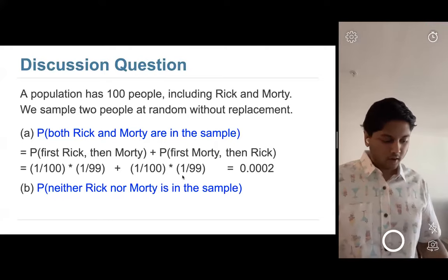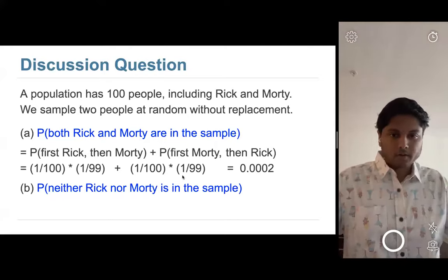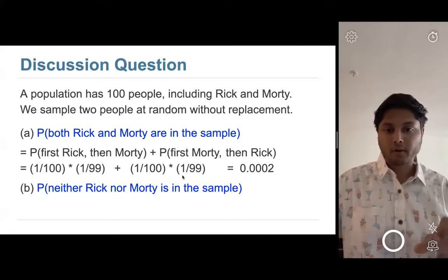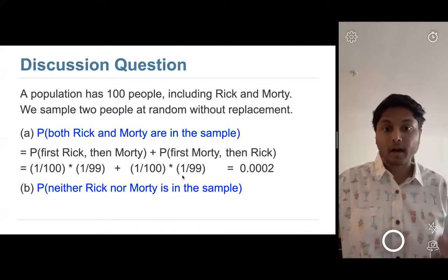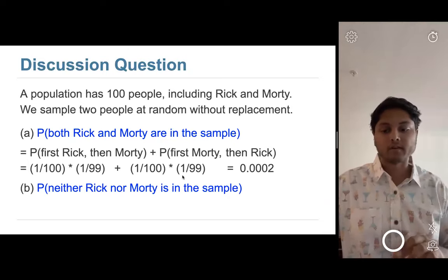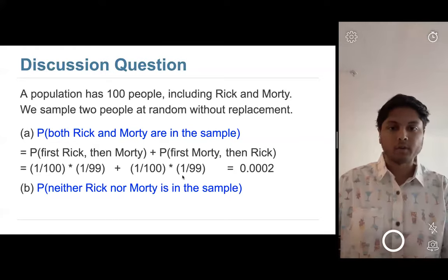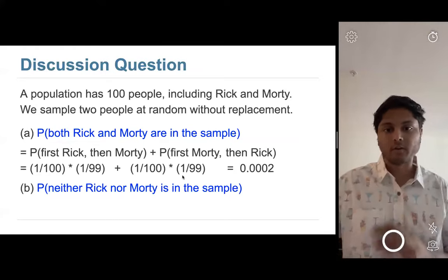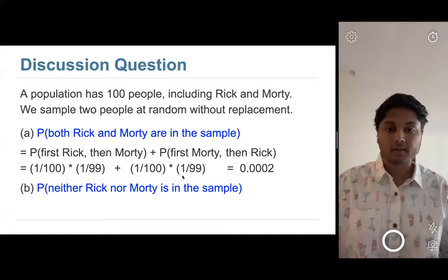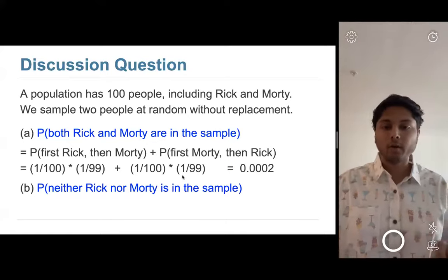For neither Rick nor Morty in the sample, note that 1 minus part A isn't quite right — the complement of both being in the sample includes three cases: just Rick, just Morty, or neither. Part B specifically asks about neither. So break it into steps: probability of not getting Rick or Morty on the first draw is 98/100. Given that, probability of not getting Rick or Morty on the second draw is 97/99.